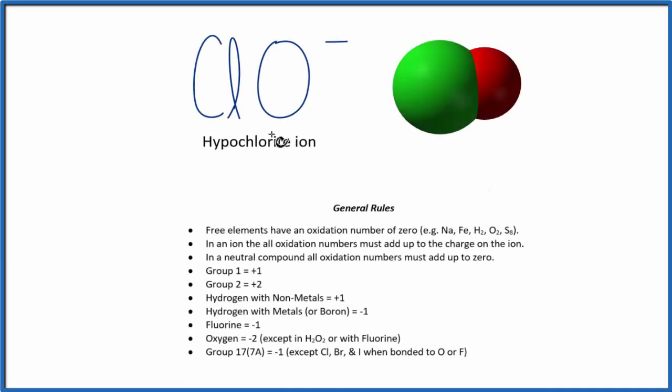In this video, we'll find the oxidation numbers for each of the atoms here in the hypochlorite ion, ClO minus.